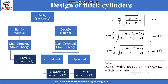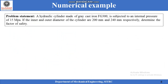All three equations can be used for calculating the thickness of a thick cylinder depending upon material and end condition of the vessel. In these equations, sigma_all stands for allowable stress, which is ultimate tensile strength divided by factor of safety for brittle material, or yield strength divided by factor of safety for ductile materials. Nu stands for Poisson's ratio, which is a property of the material.